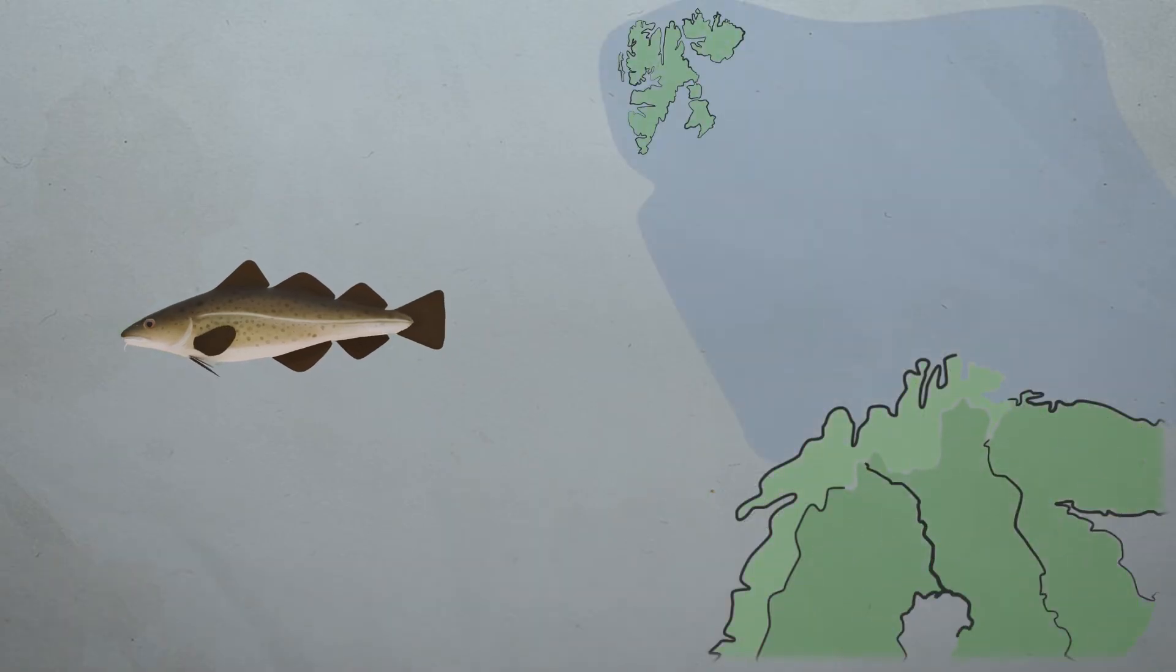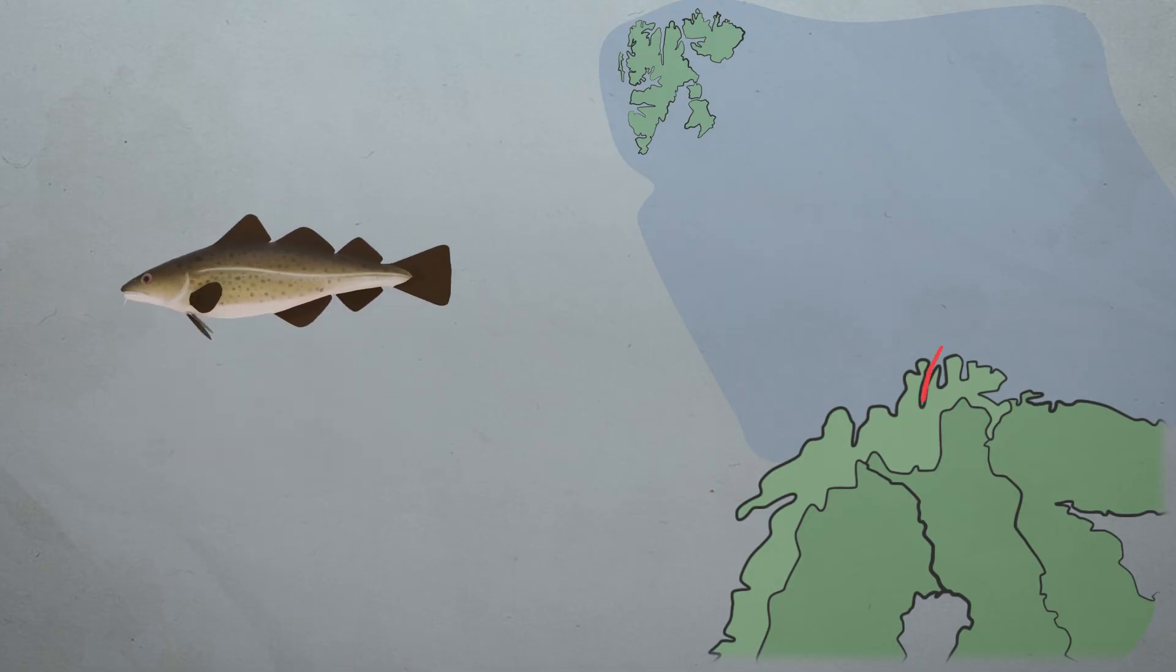The length of the migration varies depending on where the cod live. The large populations in the sea have long migration routes over large geographical areas, while coastal cod often only migrates up and down the water masses in a fjord.